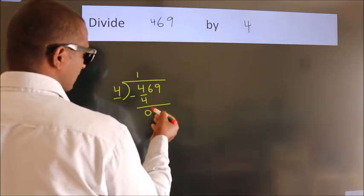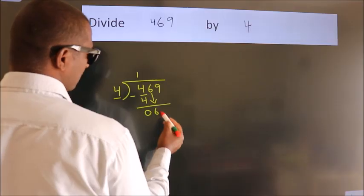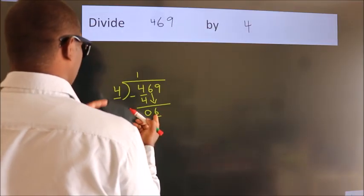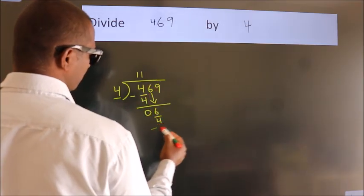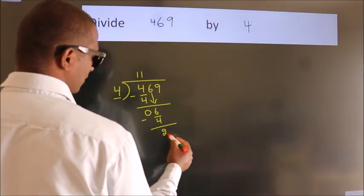After this, bring down the beside number. So 6 down. A number close to 6 in 4 table is 4 once, 4. Now we subtract. We get 2.